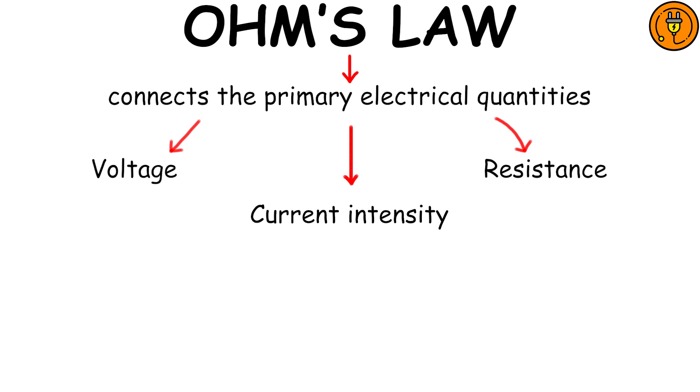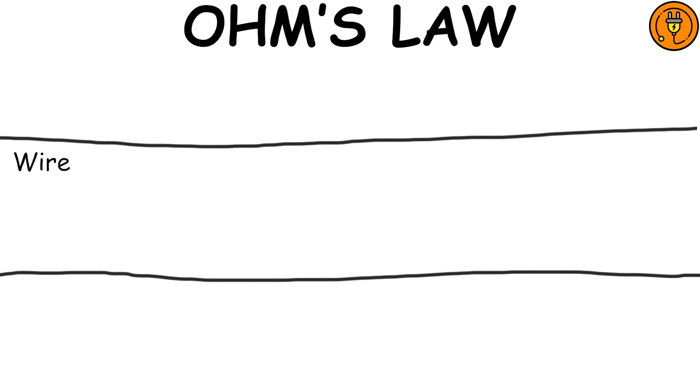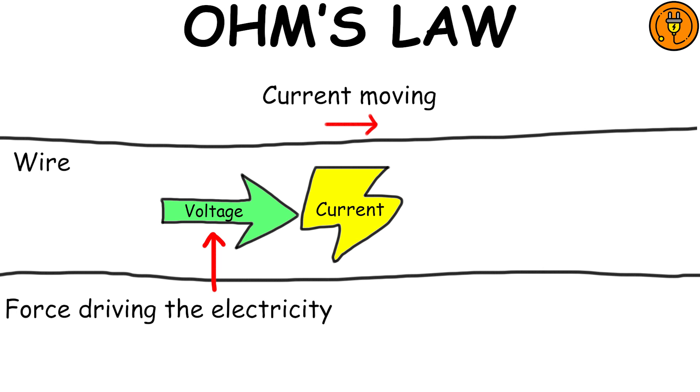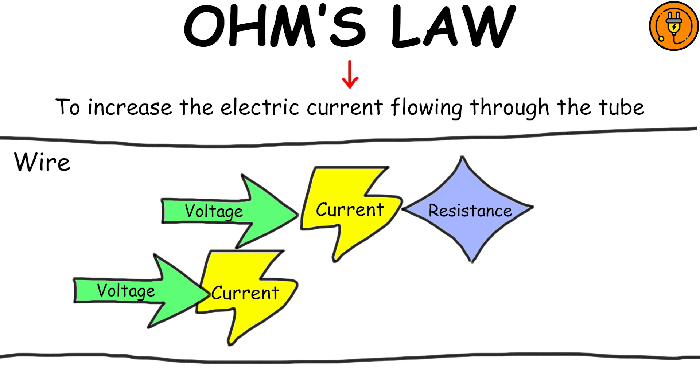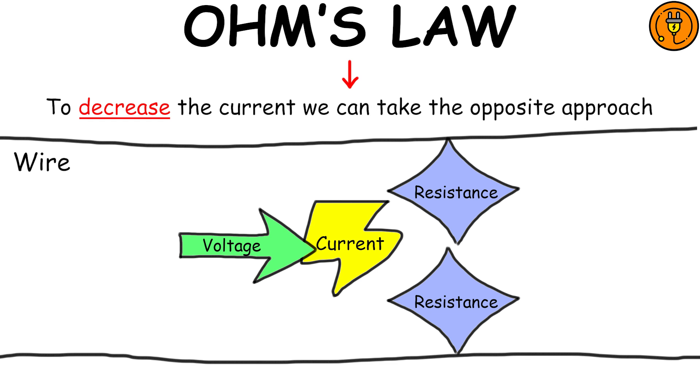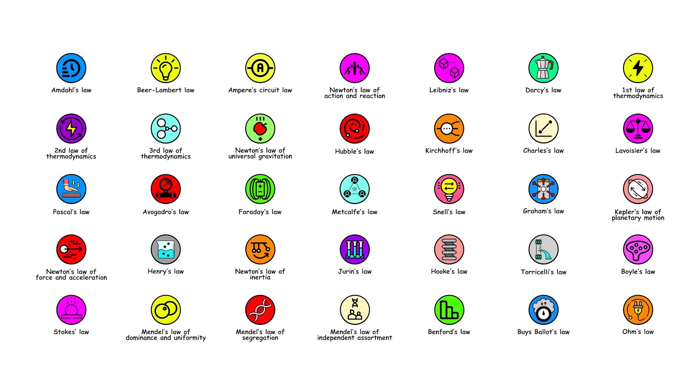Ohm's Law connects the primary electrical quantities: voltage, current intensity, and resistance in an electrical circuit. Imagine the wire as a tube through which electricity moves. Voltage represents the force driving the electricity through the tube, while resistance reflects the difficulty of its flow. To increase the electric current flowing through the tube, we can either apply more force or widen the tube. To decrease the current, we can take the opposite approach.